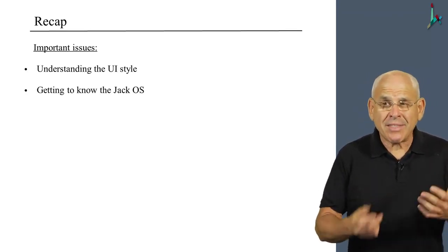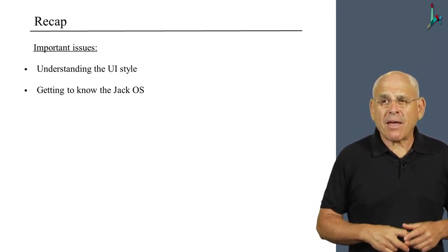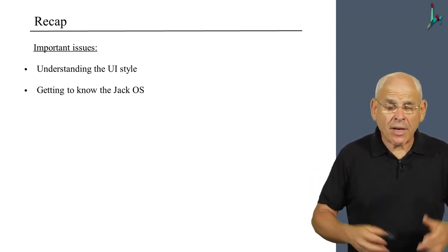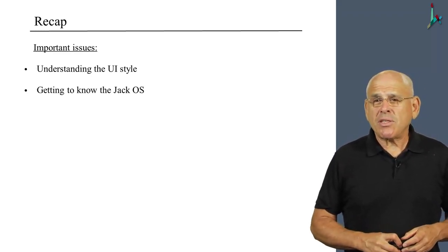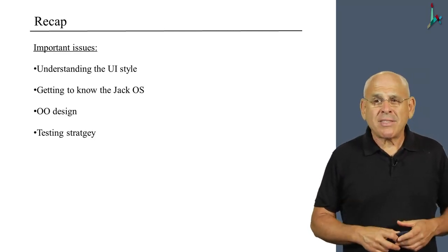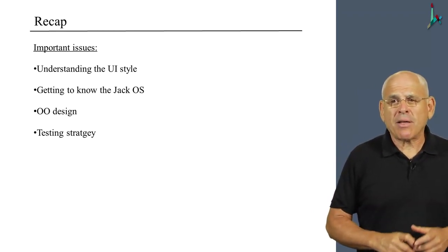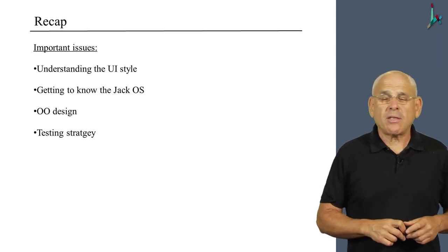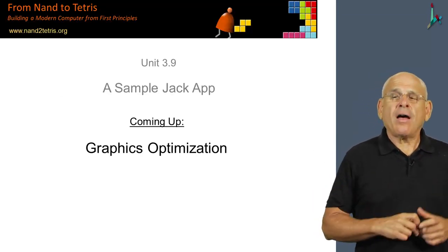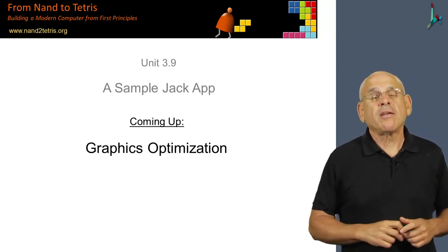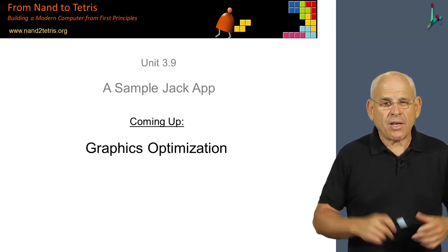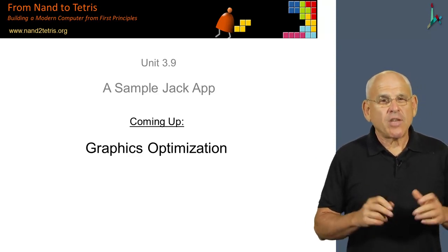To recap, we showed you this example because we wanted you to appreciate and understand the user interface style that the Jack applications feature. We wanted to show you that you have to use the operating system extensively, just like you use the operating system extensively when you write programs in Java and Python and other high-level languages. We also wanted to illustrate some basic object-oriented design. We didn't show you our testing strategy, but we wish to emphasize that this is something you have to worry about as well. You have to be able to unit test everything that you do, just like we do in any other project in this course. So with that, that's the end of this unit. In the next unit, we will discuss how to handle some graphical requirements which are more challenging than moving squares around the screen.